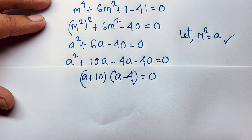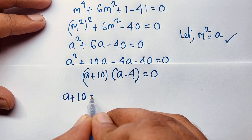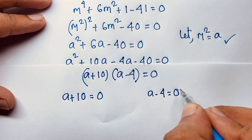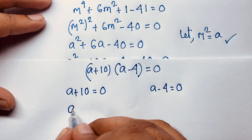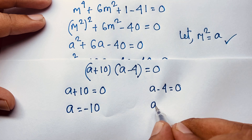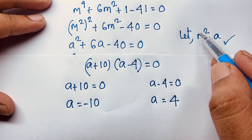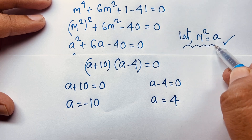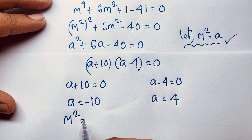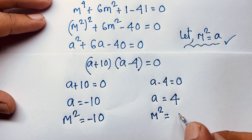We will find out there are two cases. Our first case is a + 10 = 0, and the other case is a − 4 = 0. Then you can say a = −10 and a = 4. But recall — remember that a equals m^2. So substituting, m^2 = −10 and m^2 = 4.